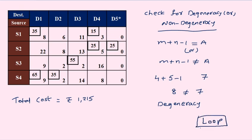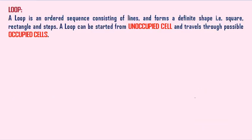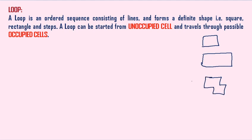The loop concept is very important in transportation problems. A loop is an ordered sequence consisting of lines forming a shape — rectangle or step shape. A loop can be started from an occupied cell and travel through other occupied cells. A loop may be in the form of a shape, a rectangle, or a step. These three forms of loop are accepted. Diagonal-type loops are not accepted; a loop cannot be in a diagonal shape.